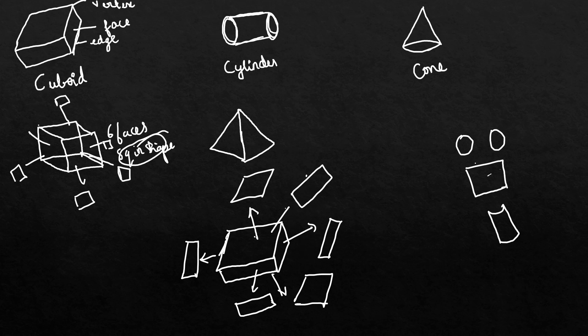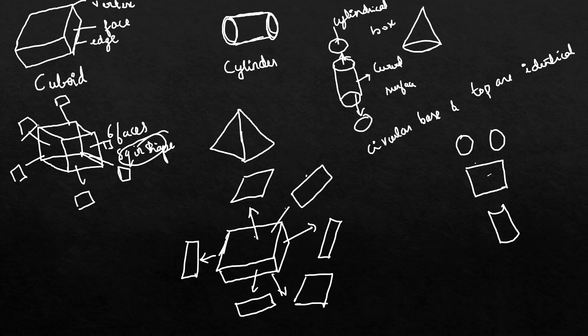In a cylinder, in a cylindrical box, see here. This is the curved surface, and this is the cylindrical box where we can find two circles. The circular base and top are identical. The circular base and top are identical, meaning they are similar - 2πr means this one, 2πr.